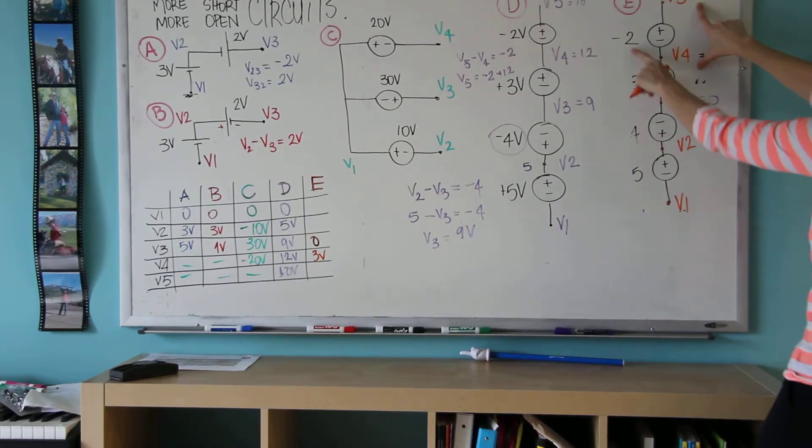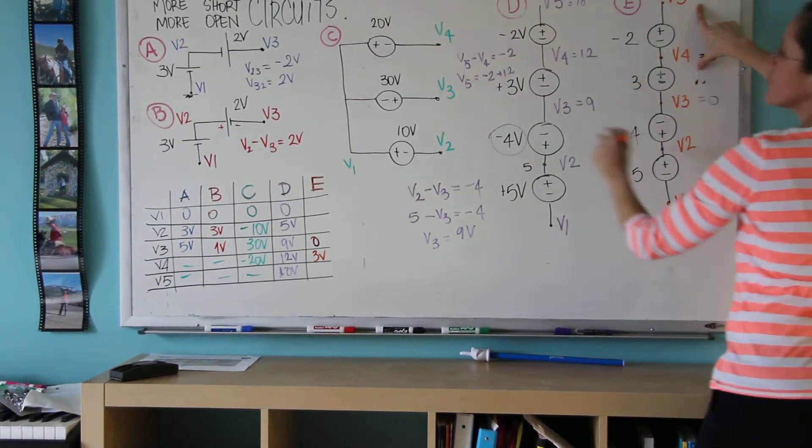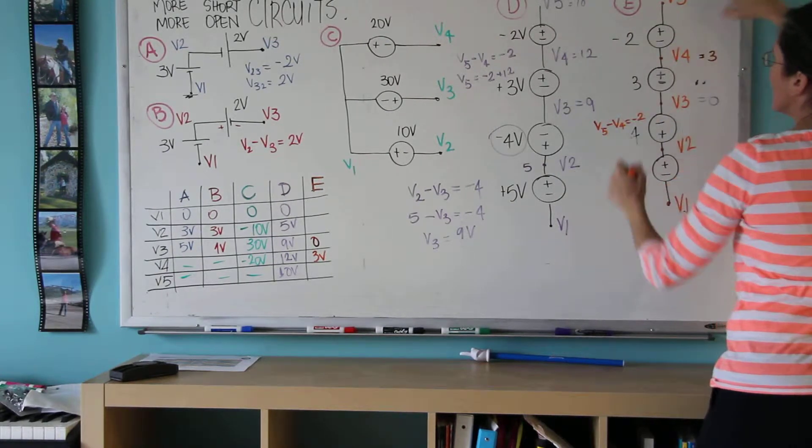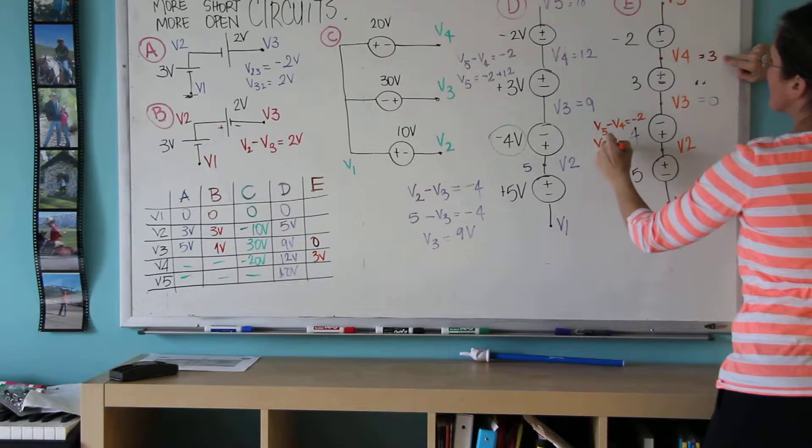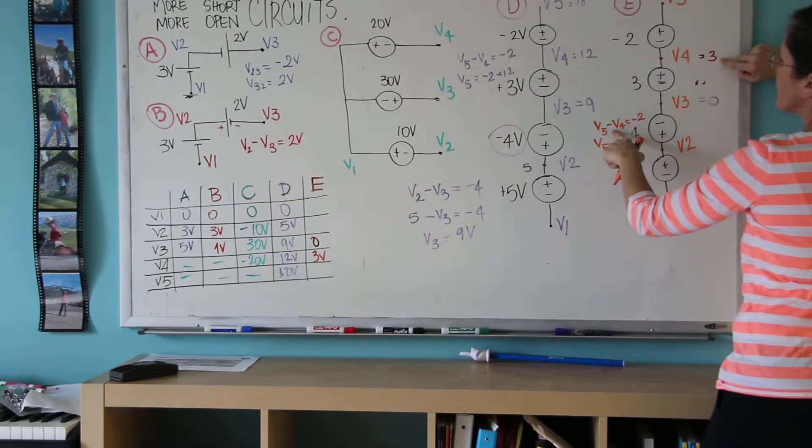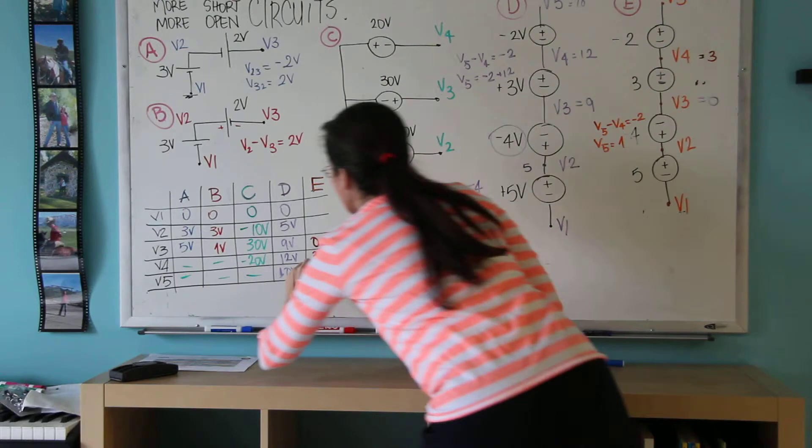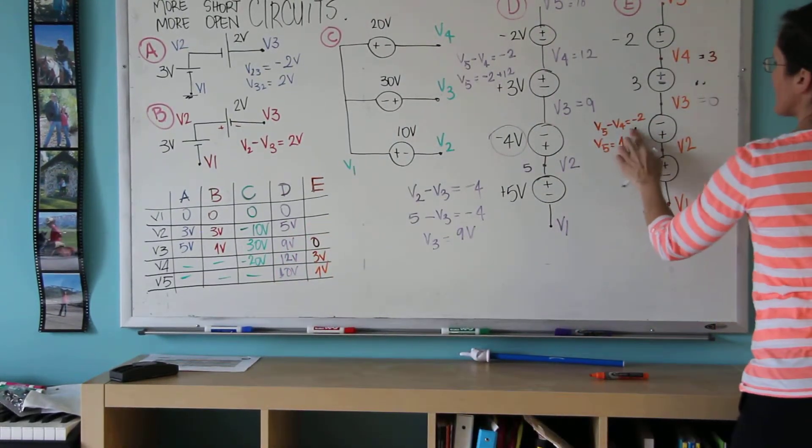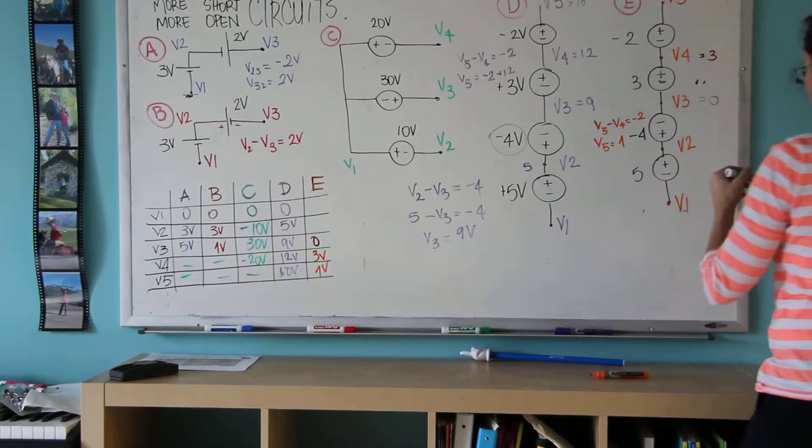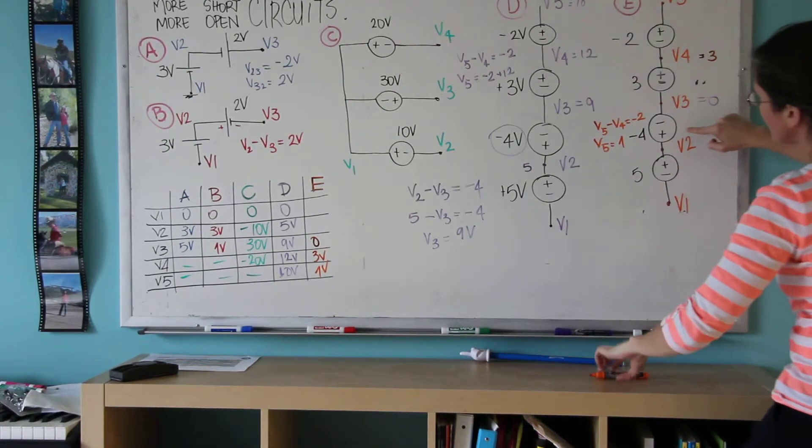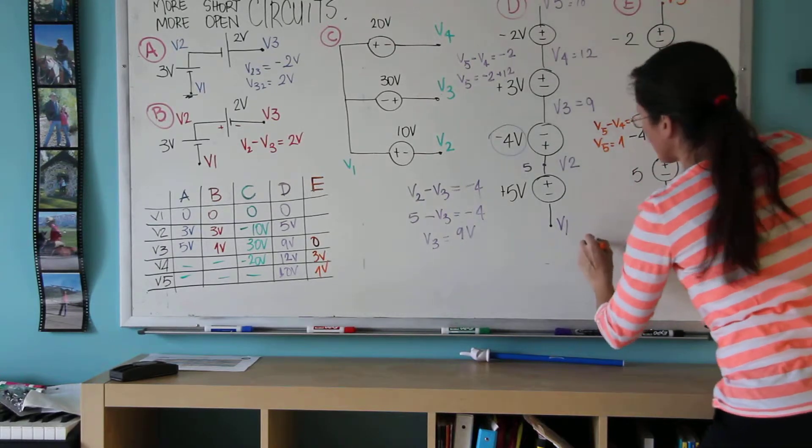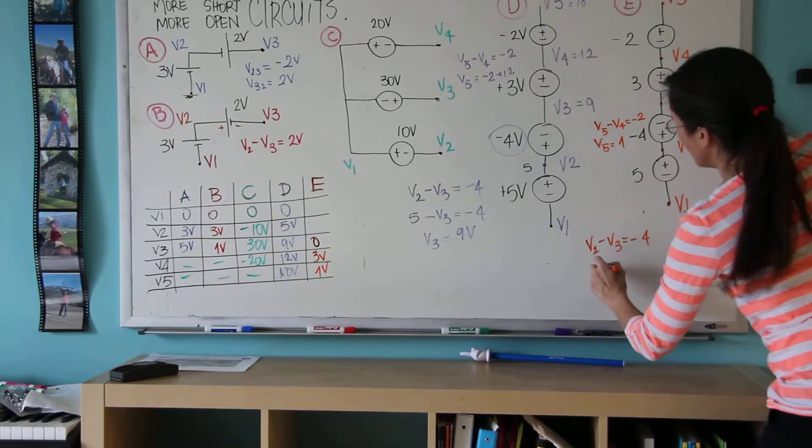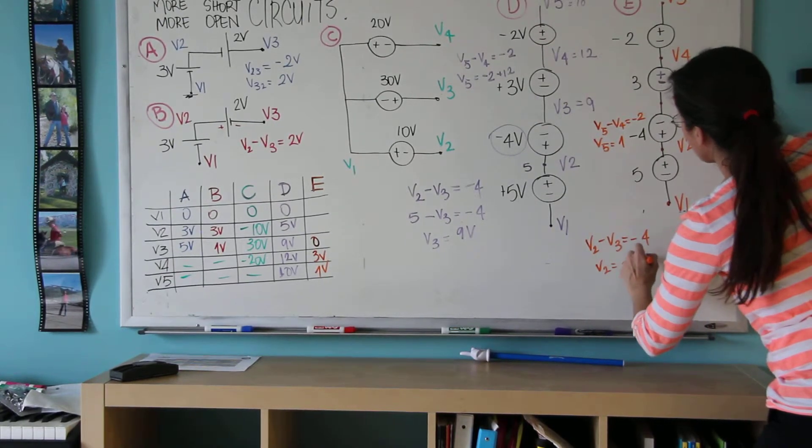V5 minus V4 equals minus 2. V5 equals this minus 3 goes plus 3 plus 1. V1. Now this here was a minus 4 when I had not erased it. Now watch. V2 minus V3 equals minus 4. And therefore, V2 equals minus 4.